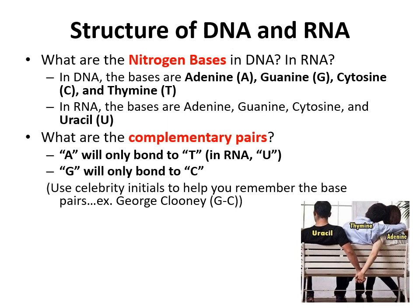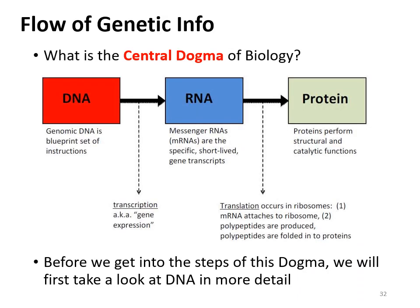Now that you're experts on the structure of nucleic acids, we can go into the details of the processes they're involved in, including DNA replication, transcription, and translation. Before we get into those details, circle, star, highlight the term central dogma. The central dogma of biology is DNA to RNA to protein. DNA to RNA is through the process of transcription, which you'll hear as gene expression in our later lectures, and then RNA to protein is the process of translation. Circle, star, highlight this information as it usually comes back in later lessons and on exams.